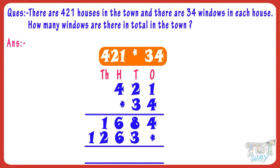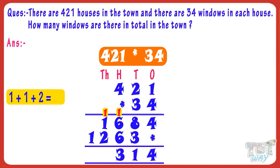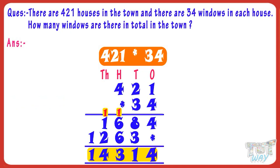Now add the products. 4 plus 0 equals 4. 8 plus 3 equals 11. Carry over 1 to the next place. 6 plus 6 plus 1 carry equals 13. Write 3 in the sum and carry over 1 to the next place. 1 plus 2 plus 1 carry equals 4. Write 4 in the sum. Write 1 in the sum. 14,314 is our product of 421 multiplied by 34.